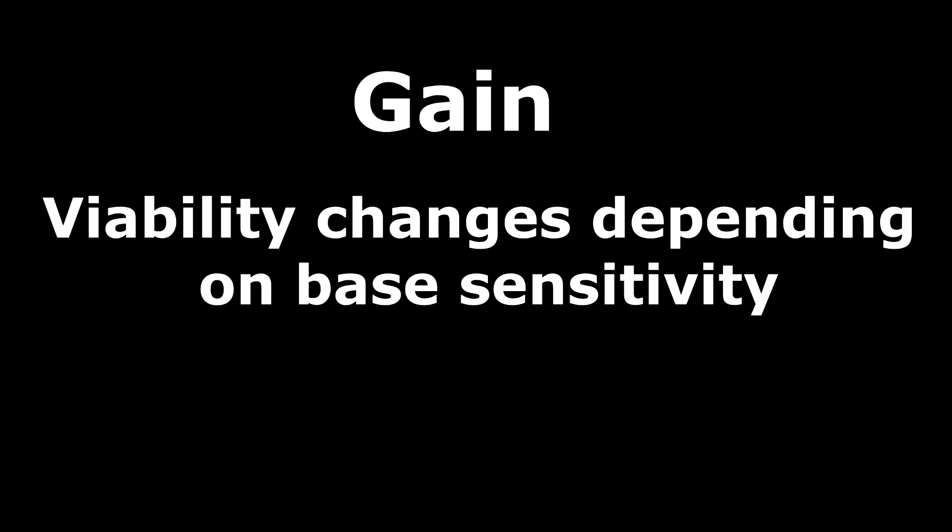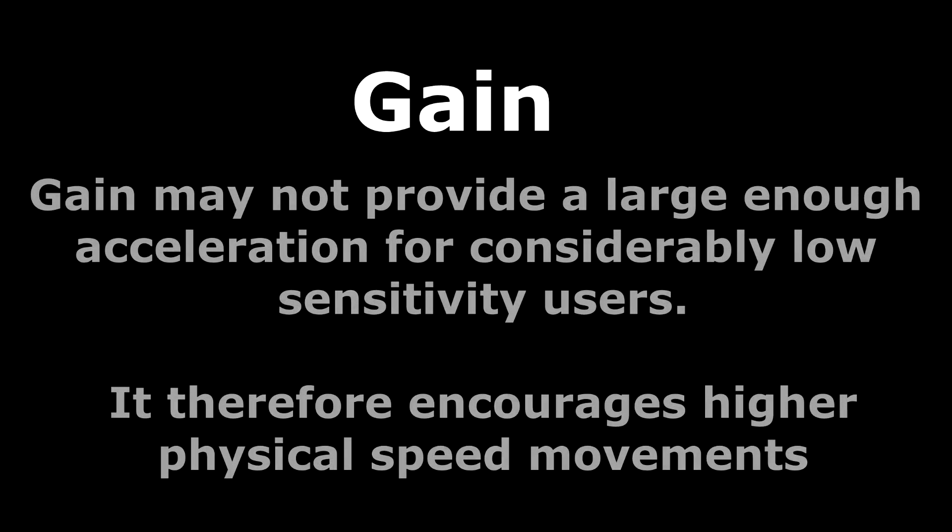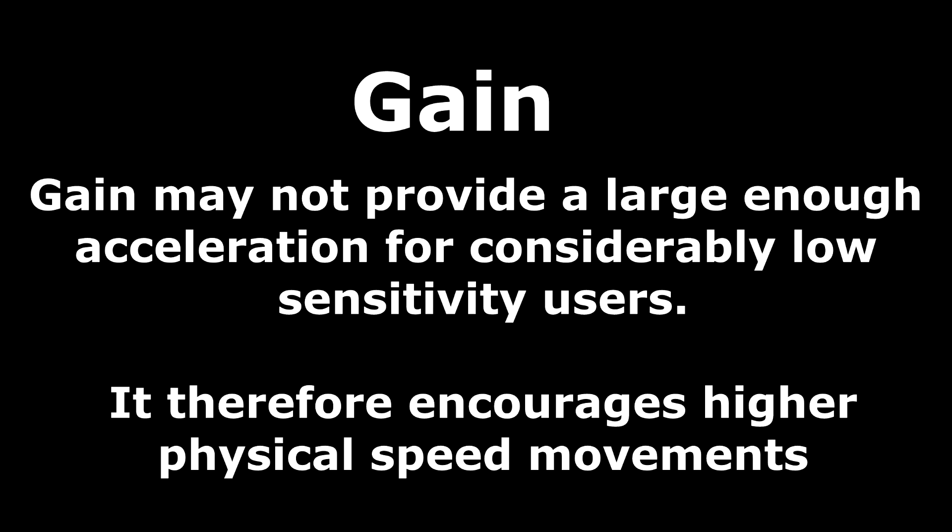I'd say the considerably low is around 80 centimeters and lower, and mid to high range is around 50 centimeters and higher, where gain becomes much more viable to use. The main reason is that for considerably low sensitivity users, the flaw with gain is that this encourages use of higher speed physical movements to achieve the faster accelerations. The aim of Raw Accel for me in aim improvement is to reduce the usage of those higher speed physical movements to maintain and even improve consistency and reduce the aiming distances required.